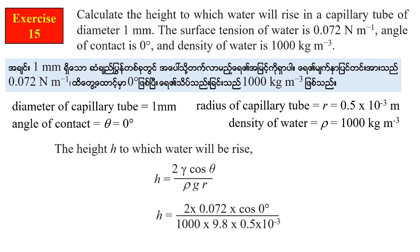Since cos 0° equals 1, the height H equals 0.0293 meters, that is 2.939 centimeters.